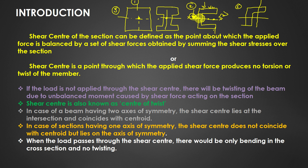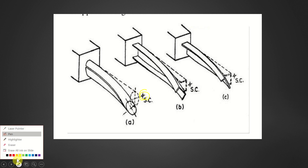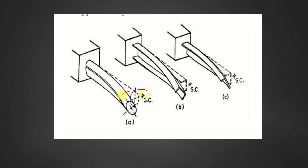We are locating the shear center to find how far it is from the center of the section. The shear center is also known as the center of twist. The three cases are: two axes of symmetry, one axis of symmetry, and no axis of symmetry. You can see in the image the twist occurring for each section. If the shear center is located outside the section and you apply load at that point, there will be no twisting — only bending — and you can apply pure bending theory: M/I = σ/y = E/R.